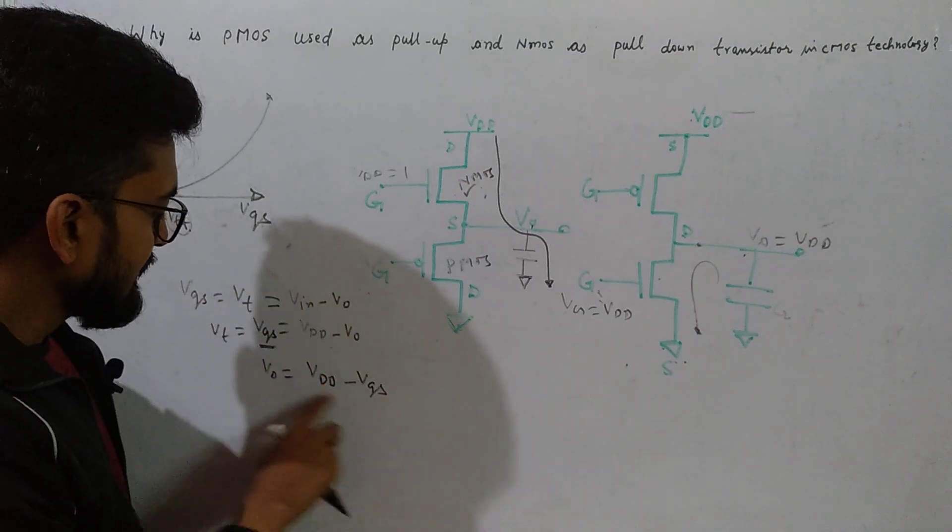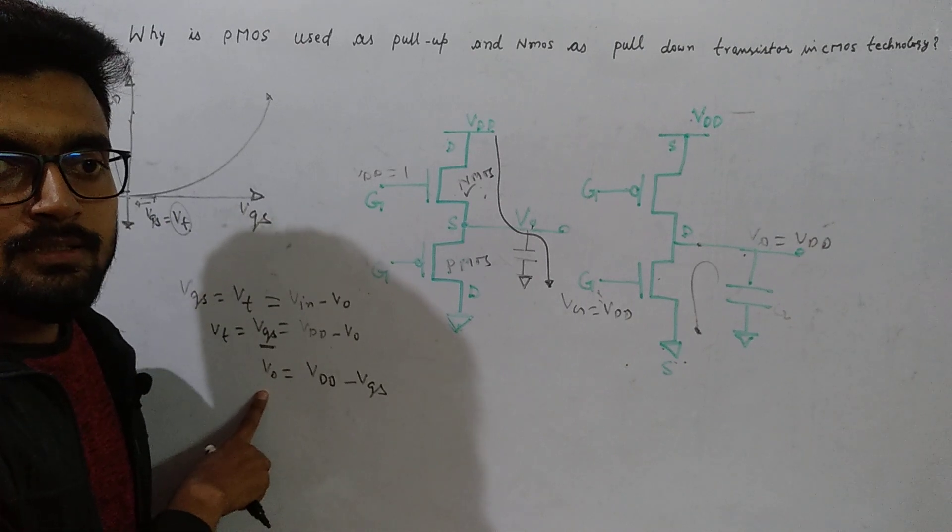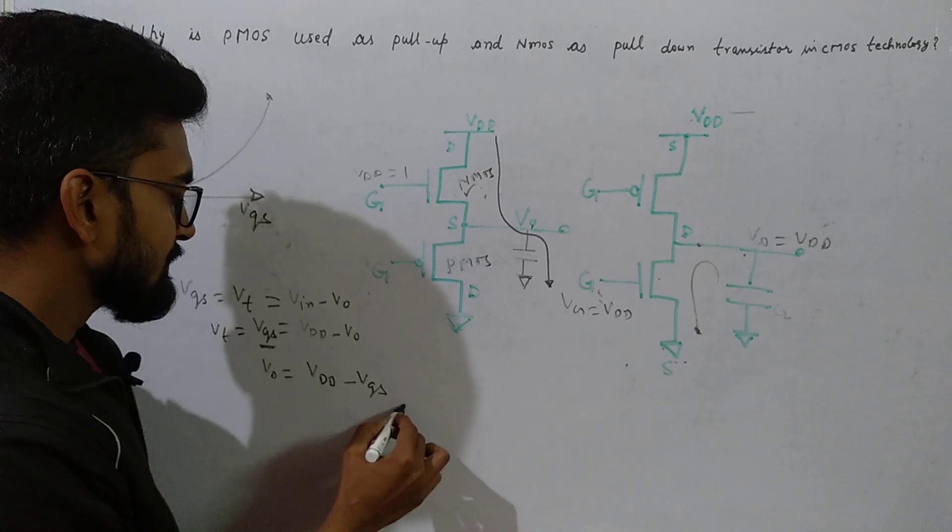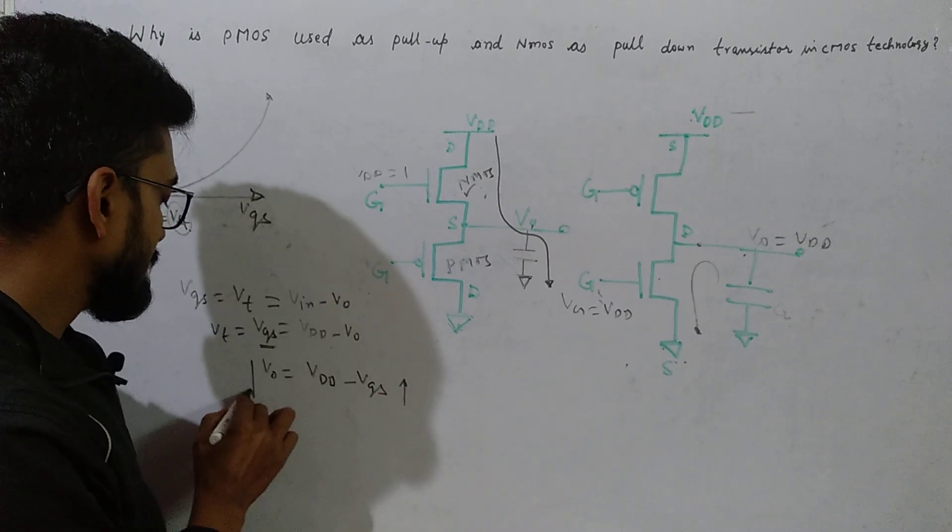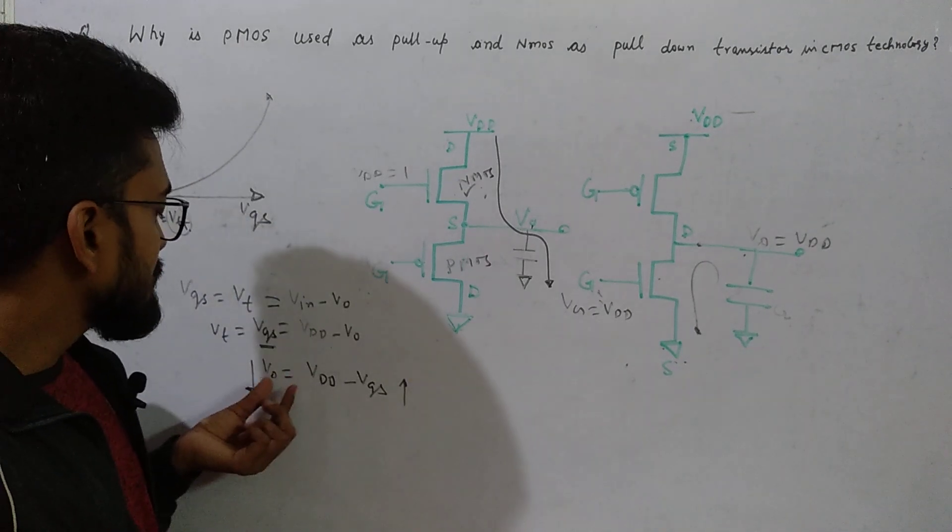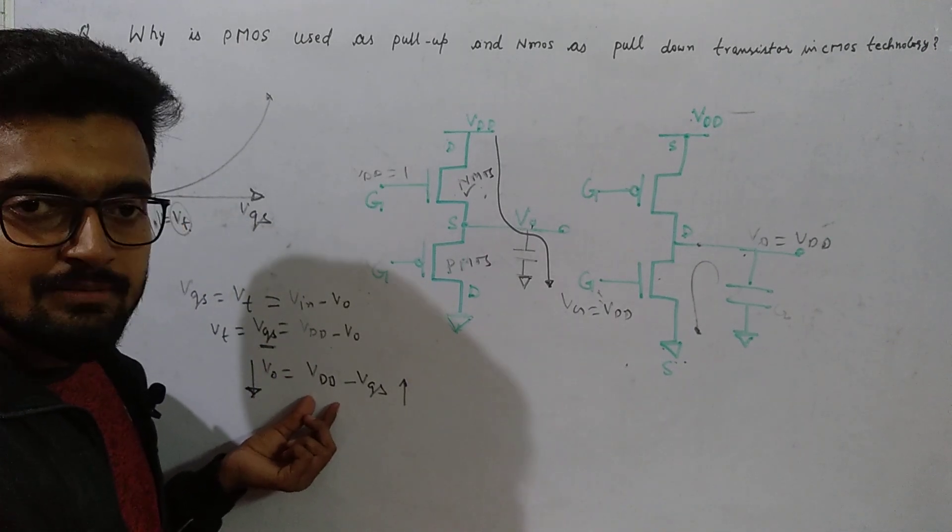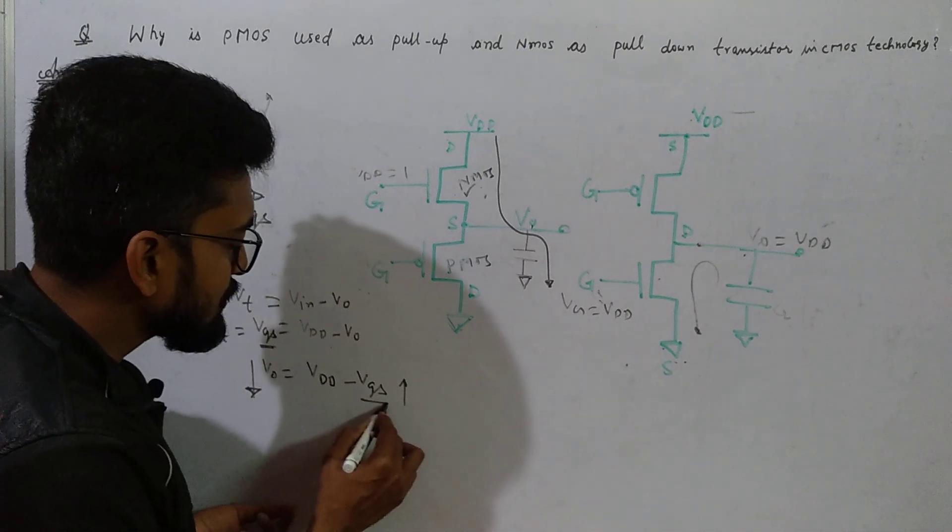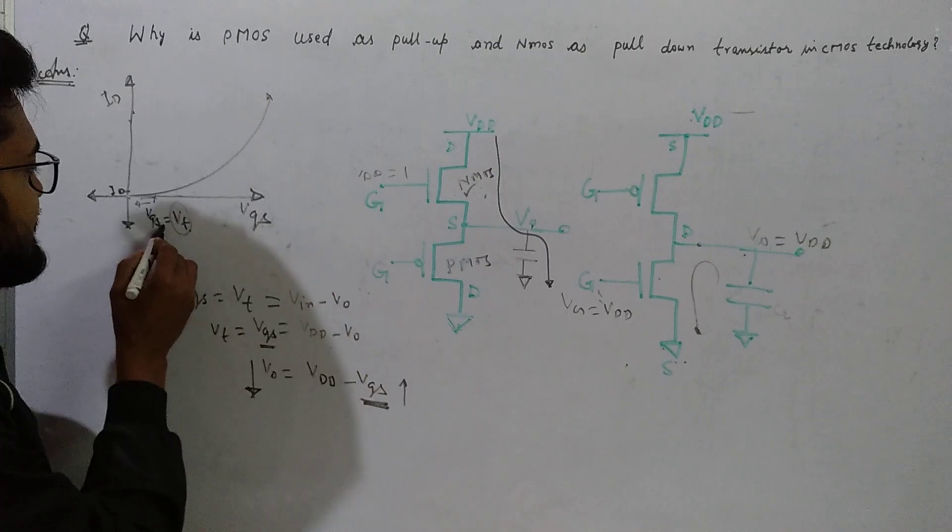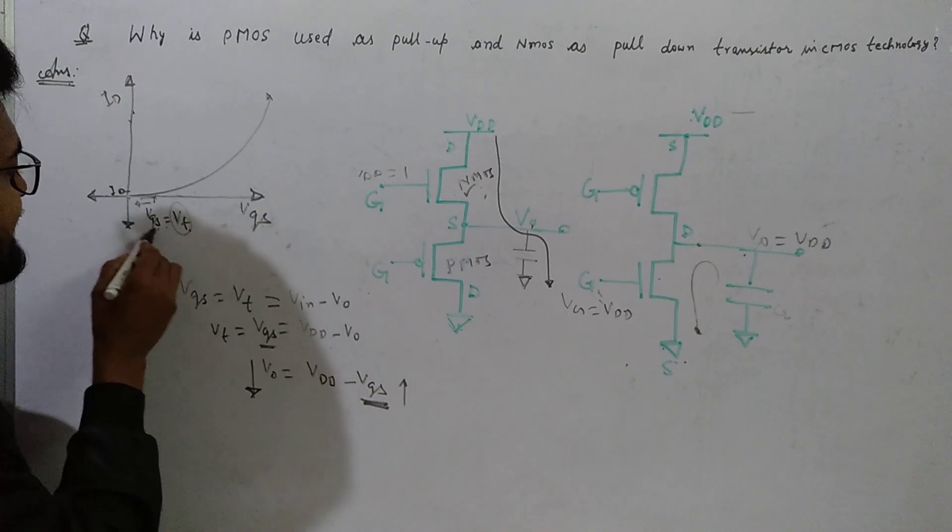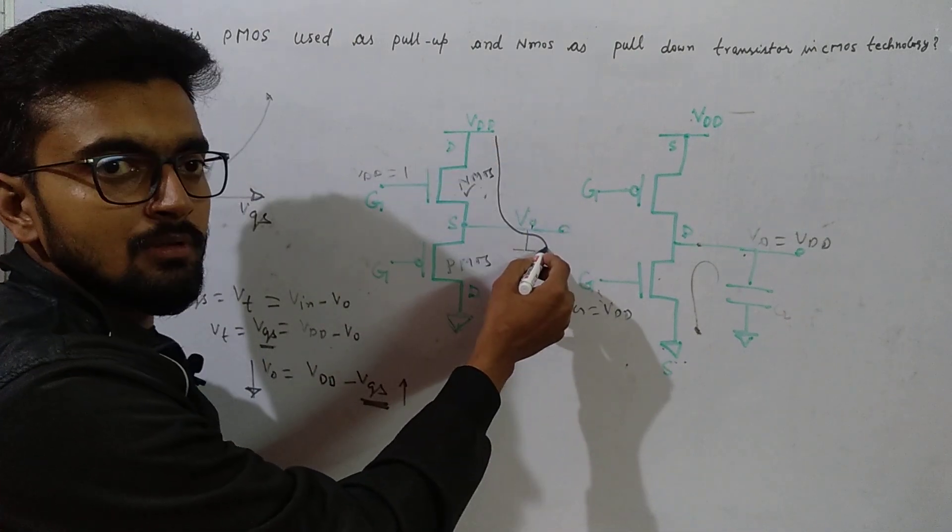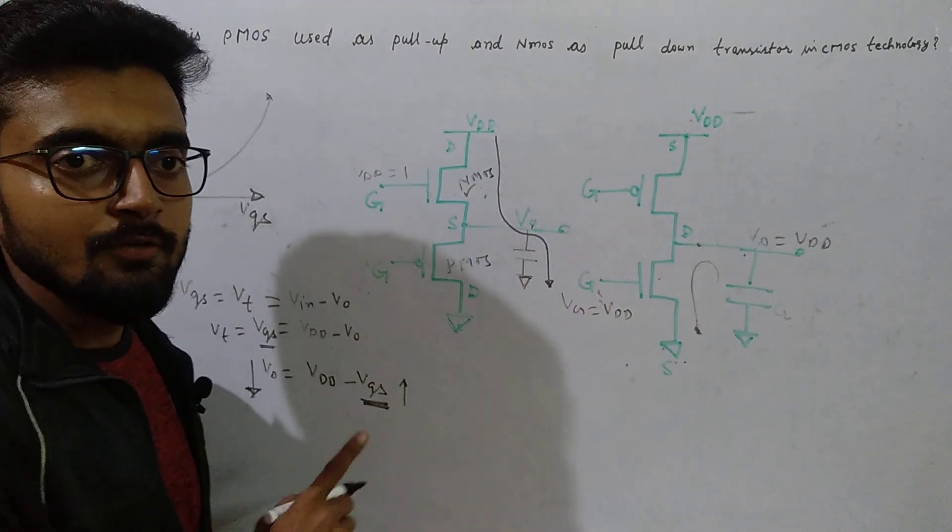But the moment we increase VGS, the output keeps decreasing. With the increase in VGS, output starts decreasing. But our goal is to achieve V output equals VDD. For that, VGS should be as low as possible. But the moment we try to decrease VGS below VT, there is no conducting path from VDD to V output because this NMOS transistor goes off.